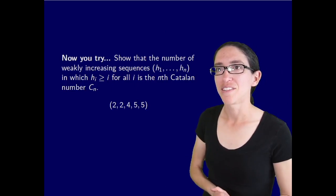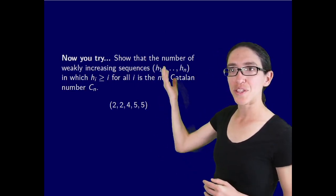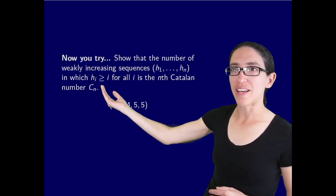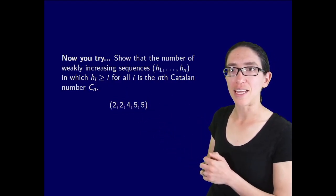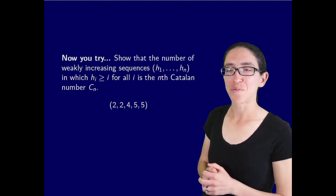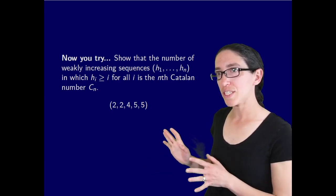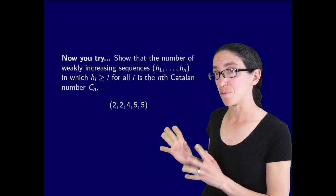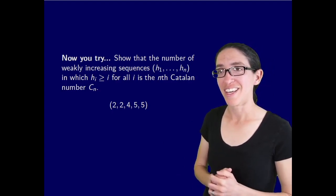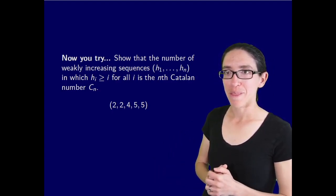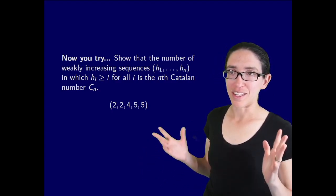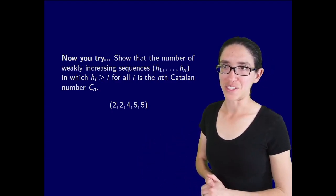So now you try. Show that the number of weakly increasing sequences h1 through hn in which h sub i is greater than or equal to i for all i is equal to the nth Catalan number. This is just yet another interpretation of the Catalan numbers and you can do this by finding a bijection with Dyck paths. These are actually called Hessenberg functions and show up in algebraic geometry. So Catalan numbers show up everywhere and I hope you enjoy. That's all for today and we'll see you next time.